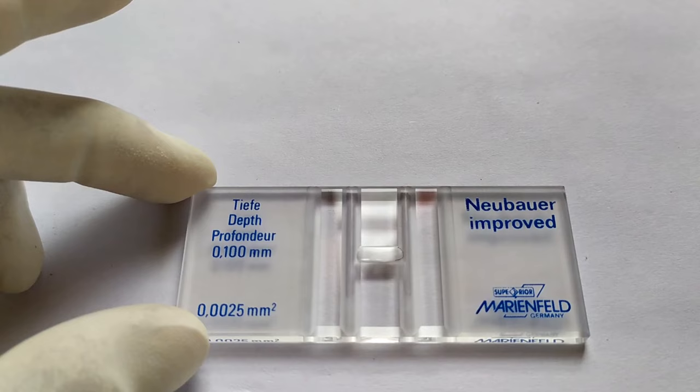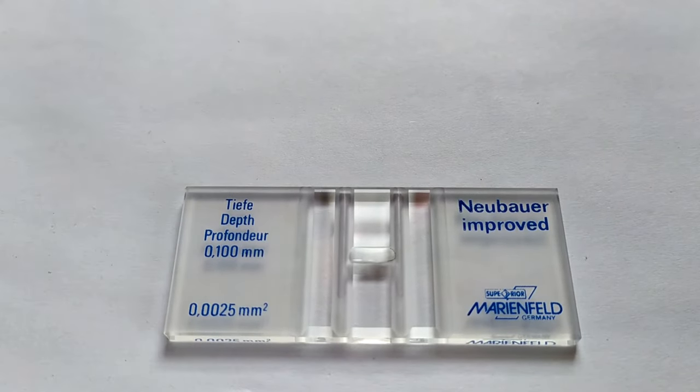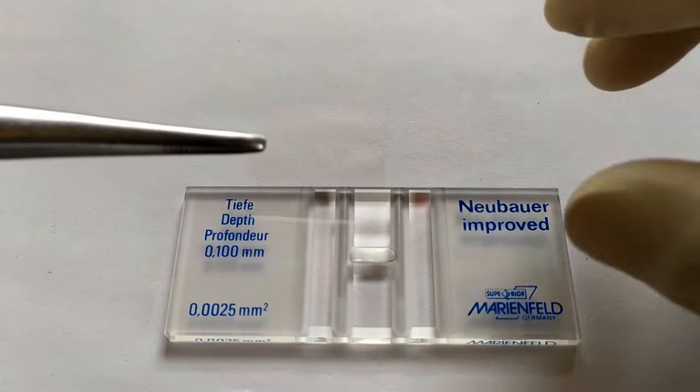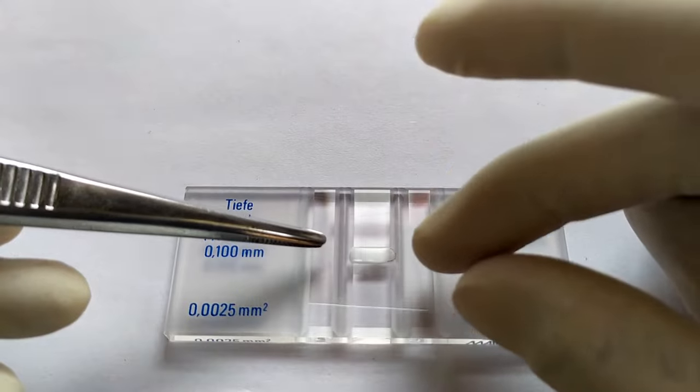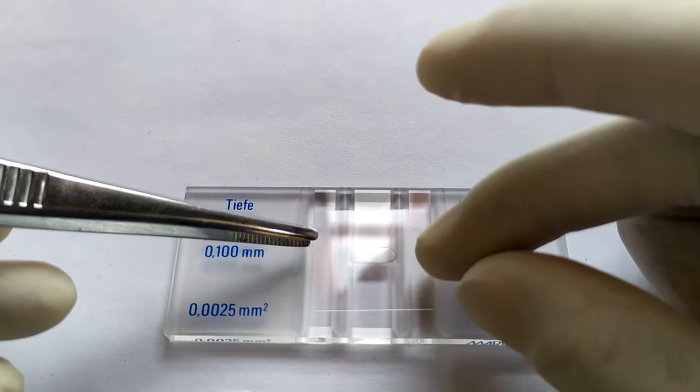Once this is done, prepare the counting chamber for sample loading. Take the counting chamber and the cover slip, both pre-cleaned with alcohol. Carefully position the cover glass on top of the support platforms located on both sides of the counting chamber.